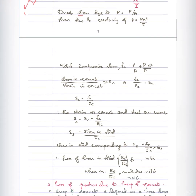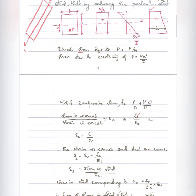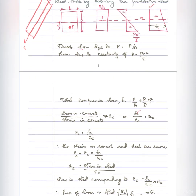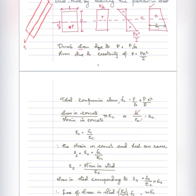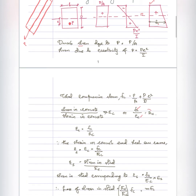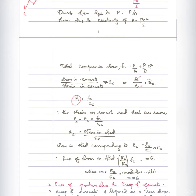By Hooke's Law, stress divided by strain is equal to the modulus of elasticity. In the concrete case, stress in concrete Fc divided by strain in concrete epsilon-c is equal to the modulus of elasticity of concrete Ec. Therefore, the strain in concrete epsilon-c is equal to Fc divided by Ec.